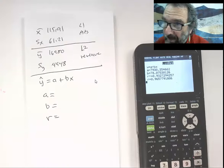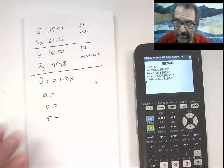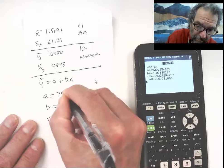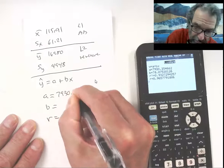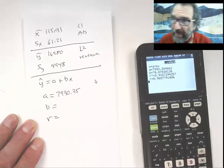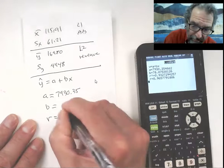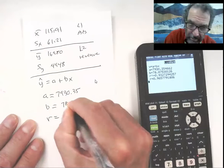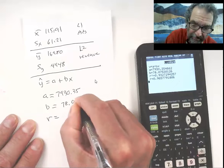Okay, so a is 7930 point, maybe I might give it some more places, 35, and b is 78.0, make it like .08, like that.